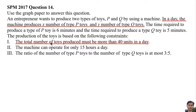The total number of toys means the number of type P toys plus the number of type Q toys, so x plus y. More than means more than 40.